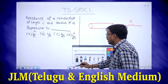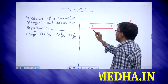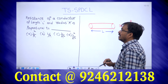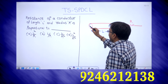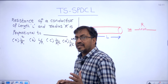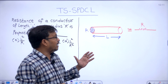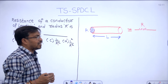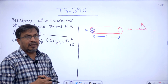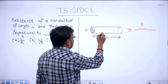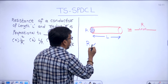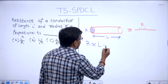I am considering the length of the conductor — L is the length of the conductor. A is the cross-sectional area. The first property is: resistance of the conductor is directly proportional to the length of the conductor. That is, R is directly proportional to L.